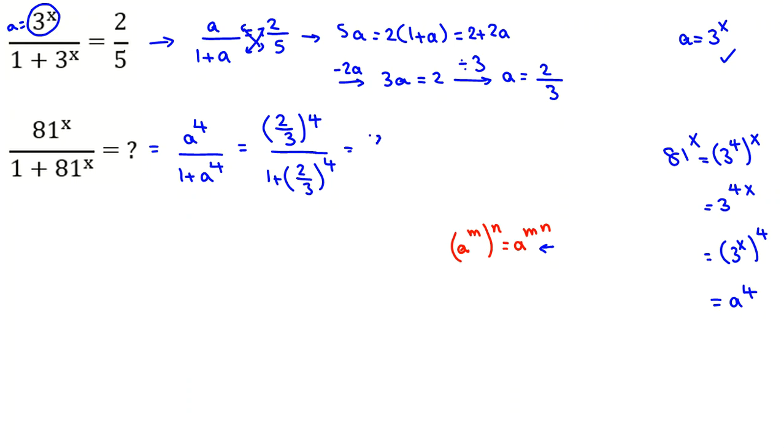Here is a to the 4. We said 2 over 3 to the 4. So, 3 to the 4, 2 to the 4, all over 1 plus 2 to the 4 over 3 to the 4.